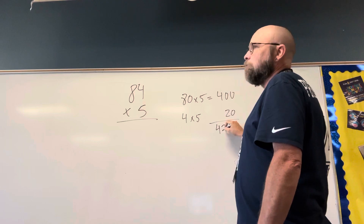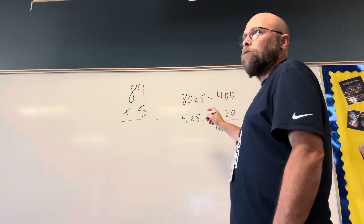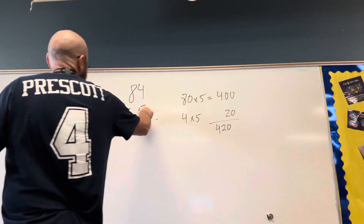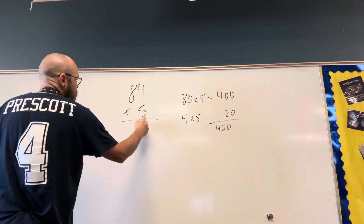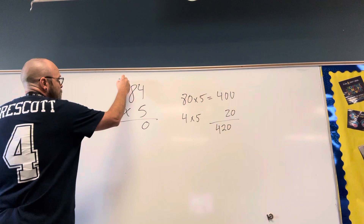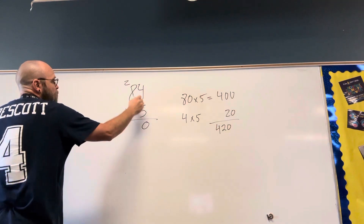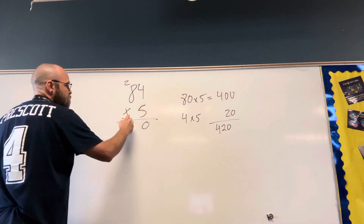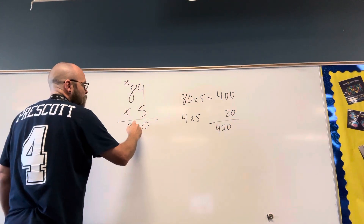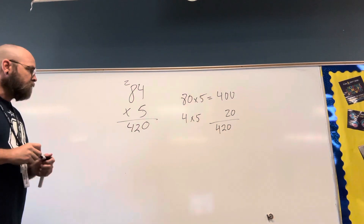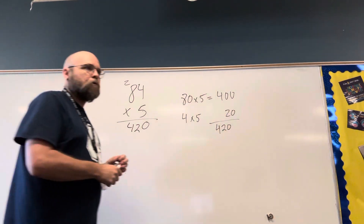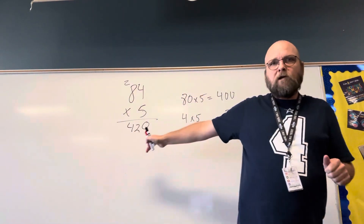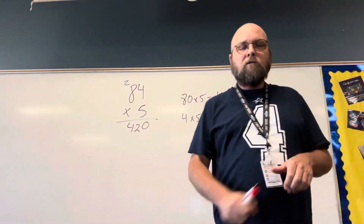420. If I wanted to do the regular standard algorithm: 5 times 4 is 20, 5 times 8 is 40, plus 2 more makes it 420. So it is 420 here.